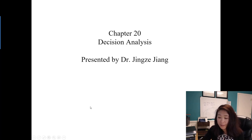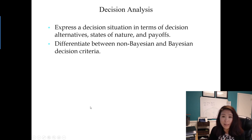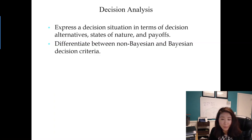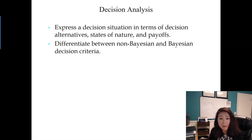In Chapter 20 we're going to learn how to express a decision situation in terms of decision alternatives, states of nature, and payoffs — basically how to create a payoff table. After you know how to describe the decision situation, we'll learn two different methods to make a decision: one is called the non-Bayesian method and the other is called the Bayesian decision criterion.